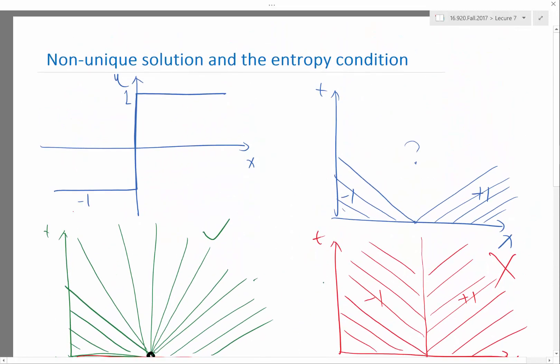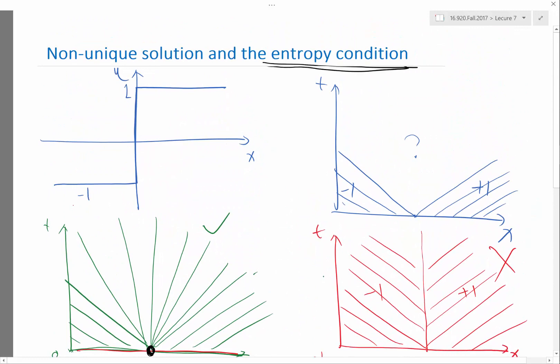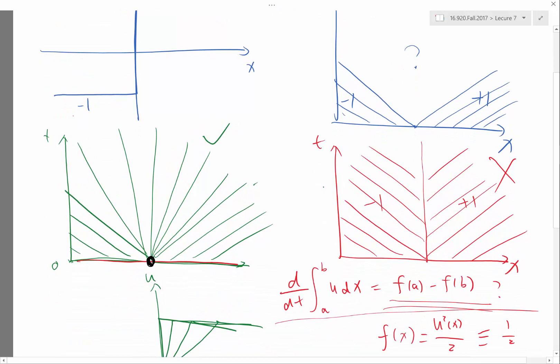This is called the entropy condition because, I mean, from the physical perspective, you can do some entropy calculation and it'll tell you that this solution actually would have an entropy that decreases. So in other words, you get information out of nothing, right?